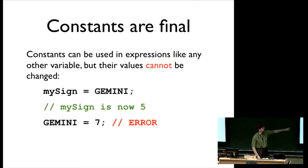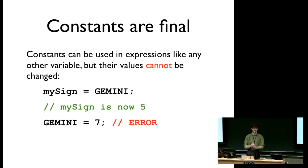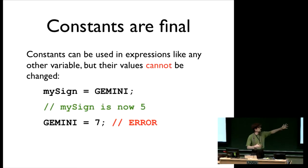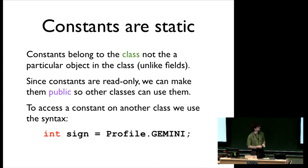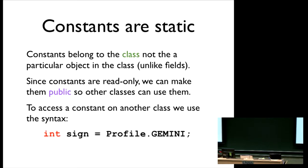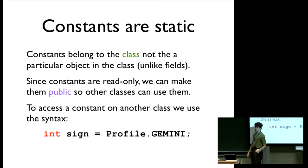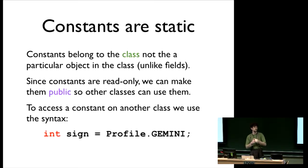Internally to the class, we can just use the name of the constant as a value and read it. If we want to access it from externally — if we make them public — we can access them externally, but we have to do the same sort of thing as an external method call: we've got to tell it where it's going to be found. This constant Gemini is defined on Profile, so to access it internally to a Profile, that's fine. To access it externally, we have to say Profile.Gemini. Anything that isn't a Profile which wants to access this has to say Profile.Gemini, or Profile.Leo, or Profile.whatever.